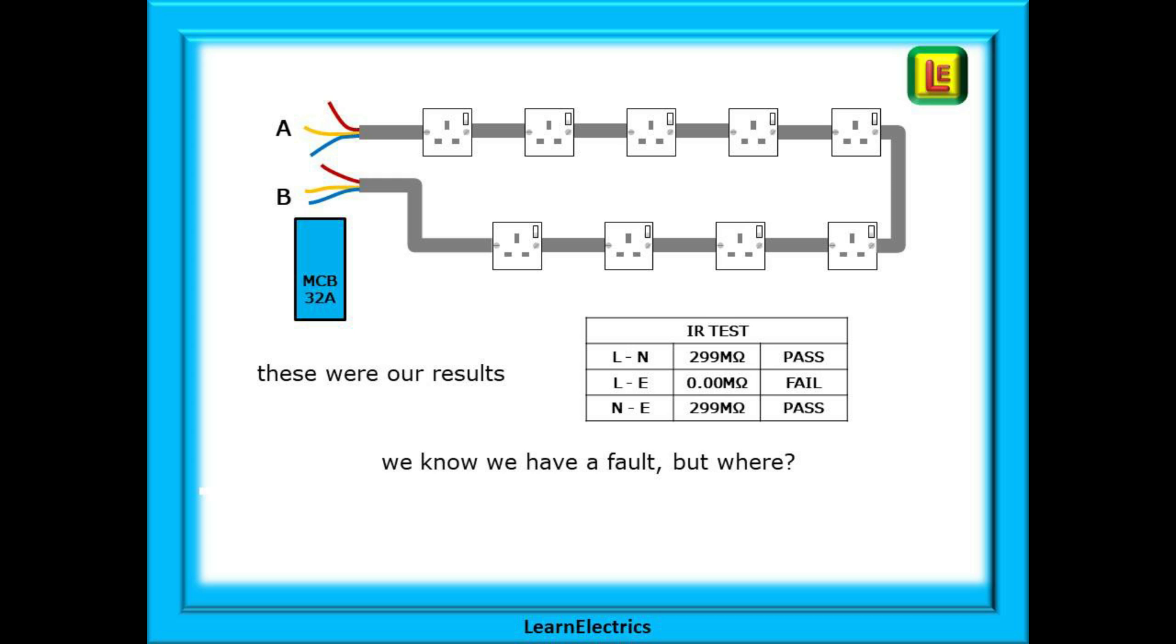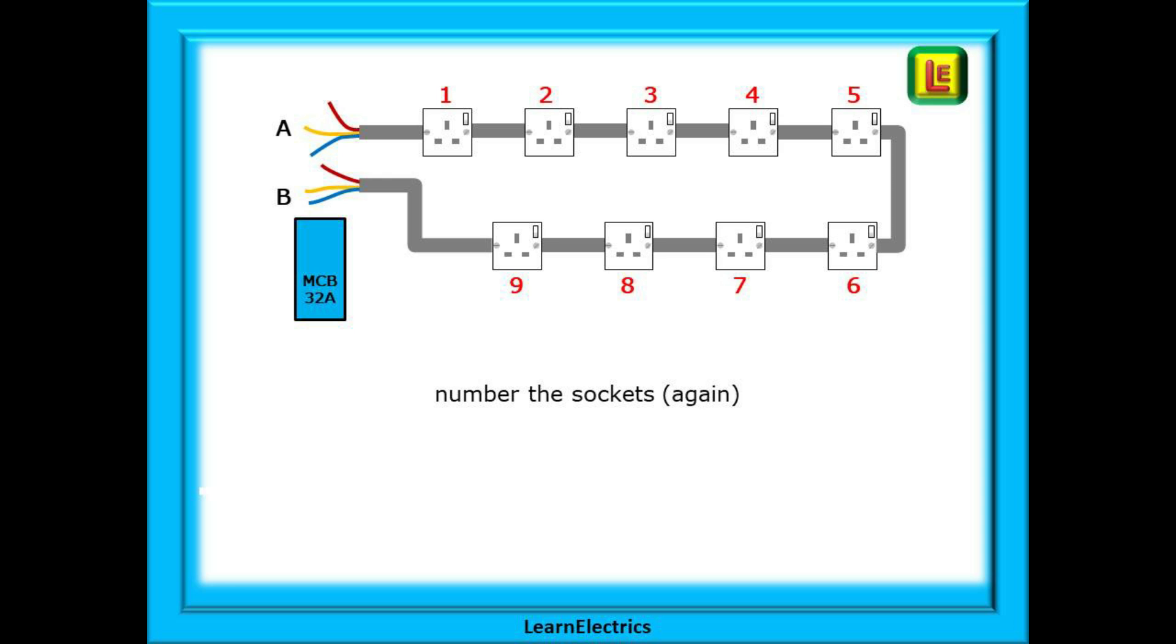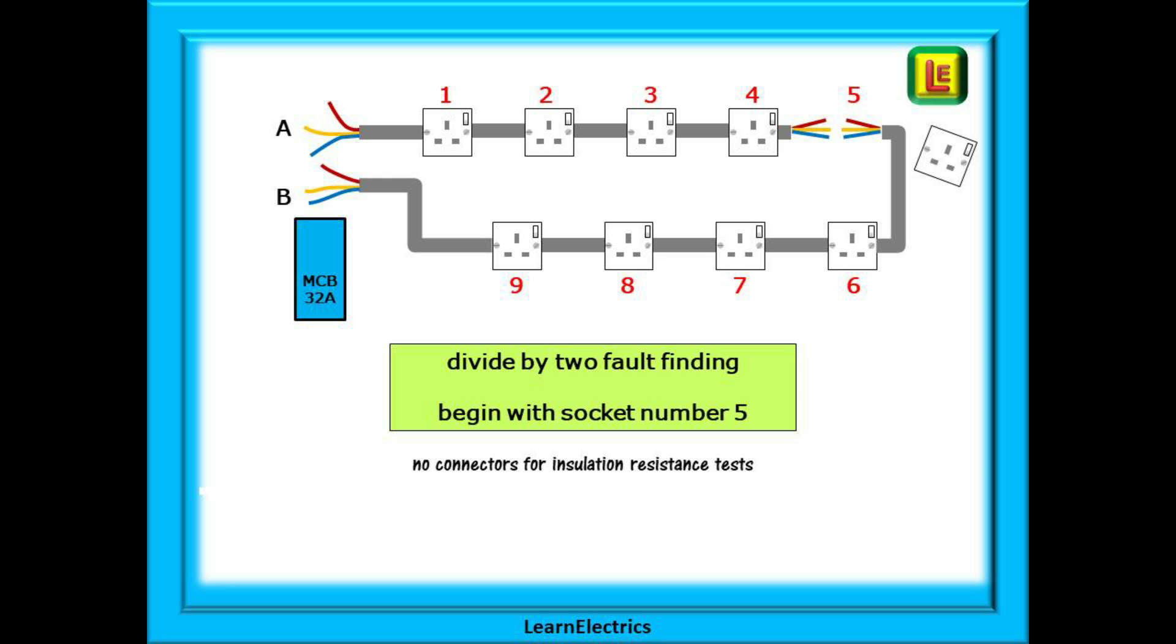So here we are with our faulty circuit. Let's imagine we have done the tests and these were our results. On the twin and earth cable, it appears that we have a short or some problem between the live or phase conductor and the earth. We want high ohms readings, for example 299 megaohms, to indicate a pass. And live to earth in our example here is only giving us zero ohms. But where is the fault?